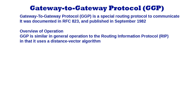It was actually a pretty good method of route determination back then. This is because the early internet used both computers and links that would be considered glacially slow by today's standards, making each hop fairly expensive compared to modern routing.